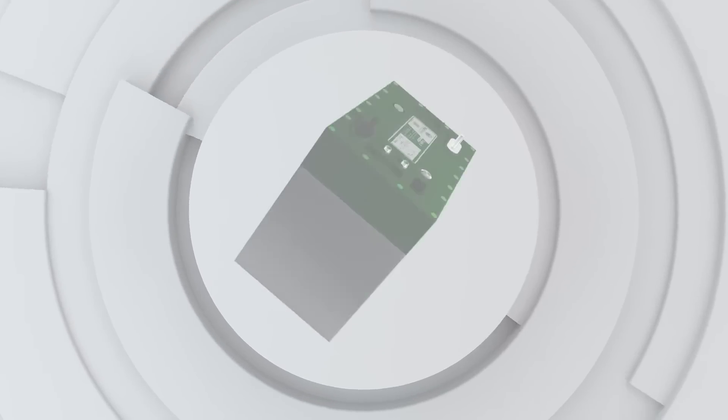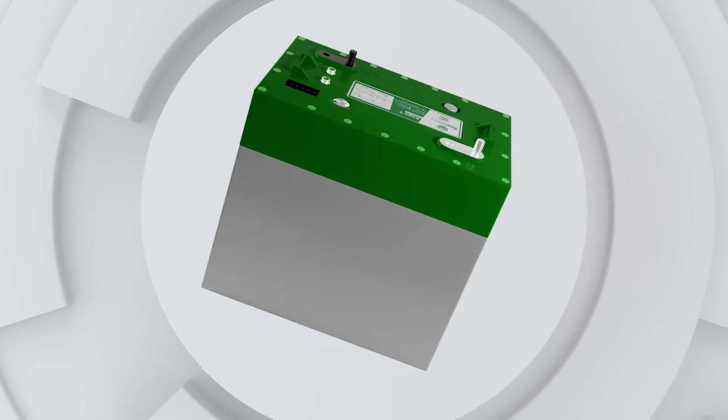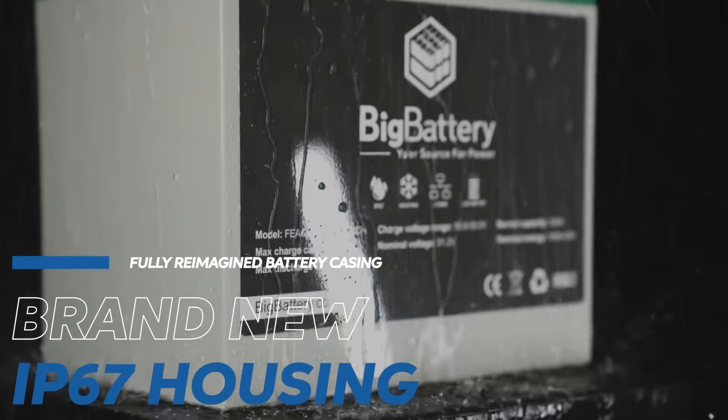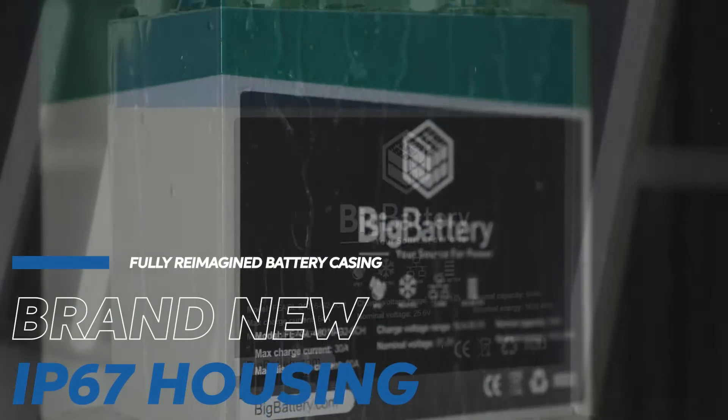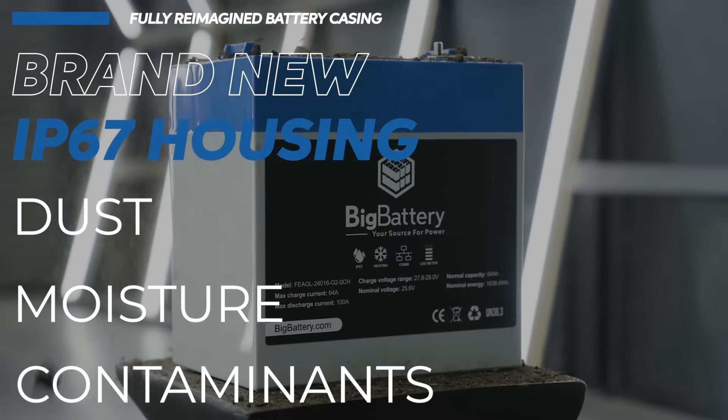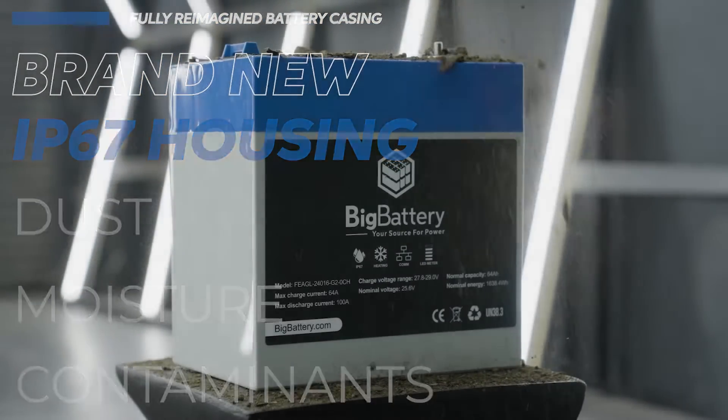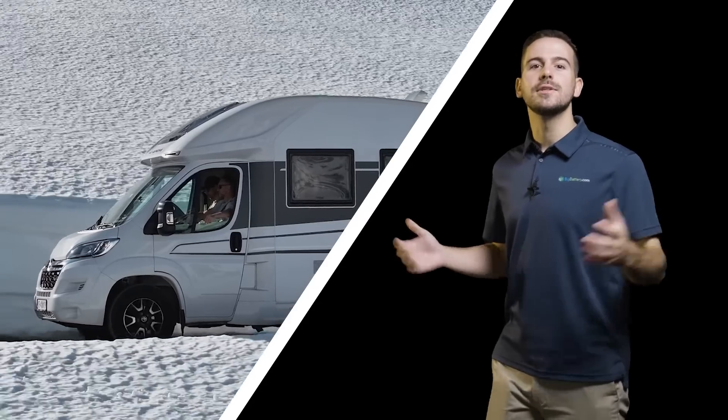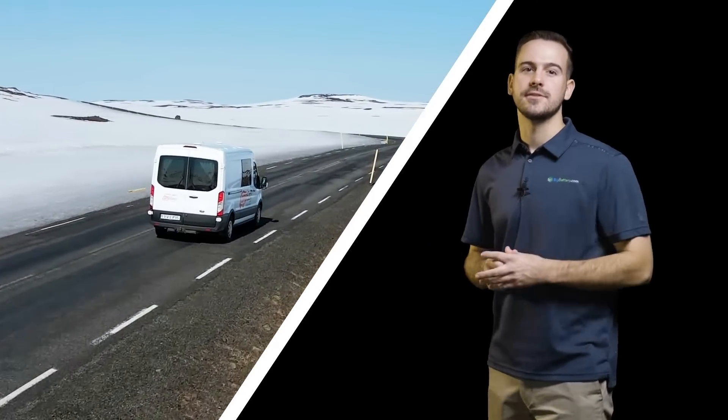This second-generation battery's components are housed inside a fully reimagined casing, allowing you to take the Eagle II where you've never taken it before. Our brand new IP67 housing provides comprehensive watertight protection against dust, moisture, and other contaminants. Plus, with a wide temperature operating range and a self-heating function, your batteries are always ready to perform no matter where your adventures take you.